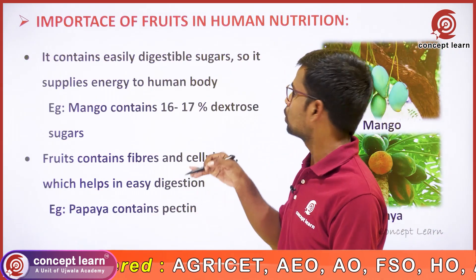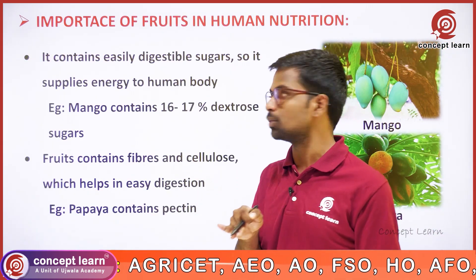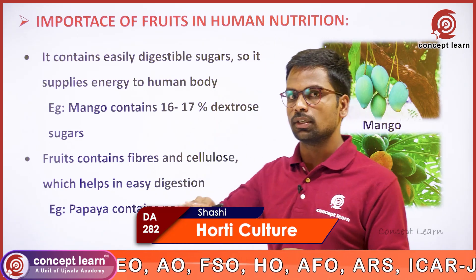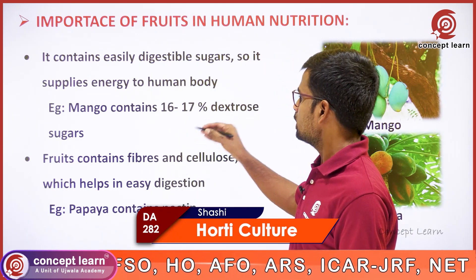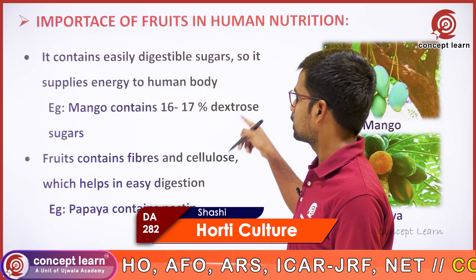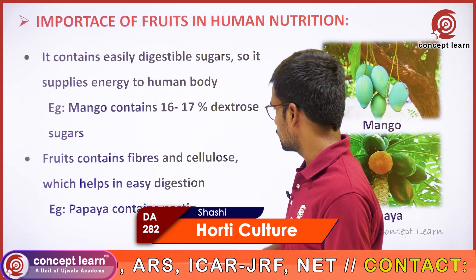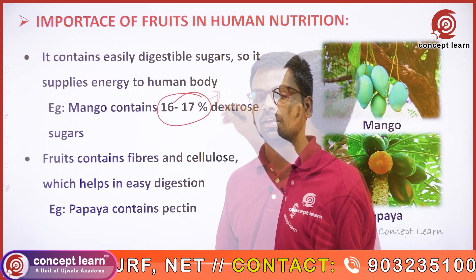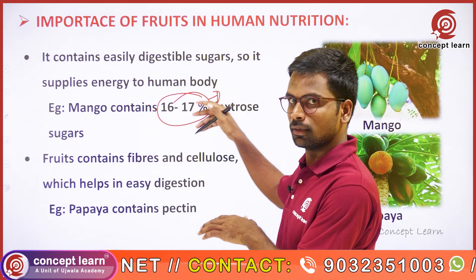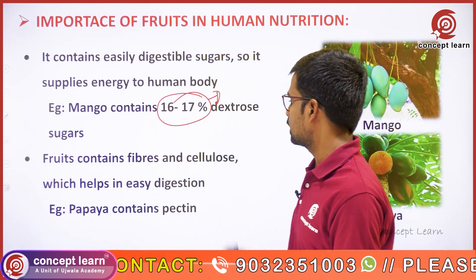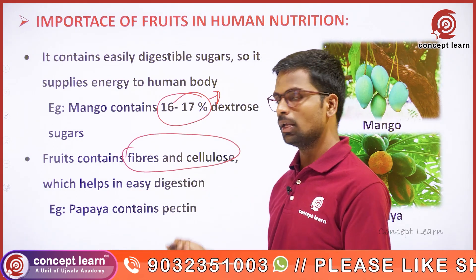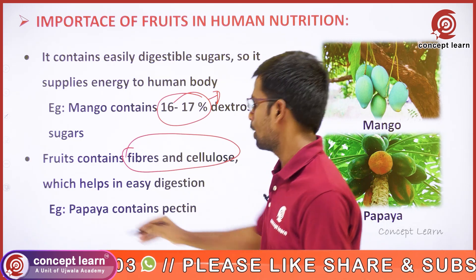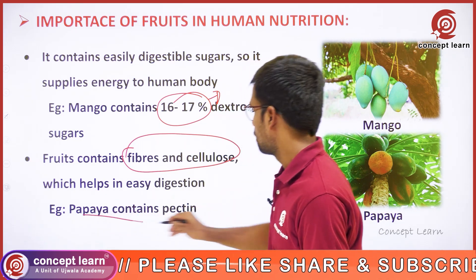In human nutrition, fruits contain easily digestible sugars. Mango contains 16-17% dextrose sugar, making it easy to digest. Fruits also contain fibers and cellulose, which we use in the digestion process. Papaya contains pectin.